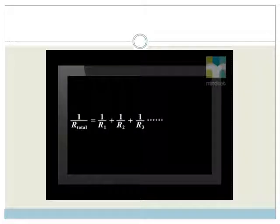If resistors are connected in parallel, the following formula is used to find the total resistance: 1 divided by R total equals 1 divided by R1 plus 1 divided by R2 plus 1 divided by R3, etc.